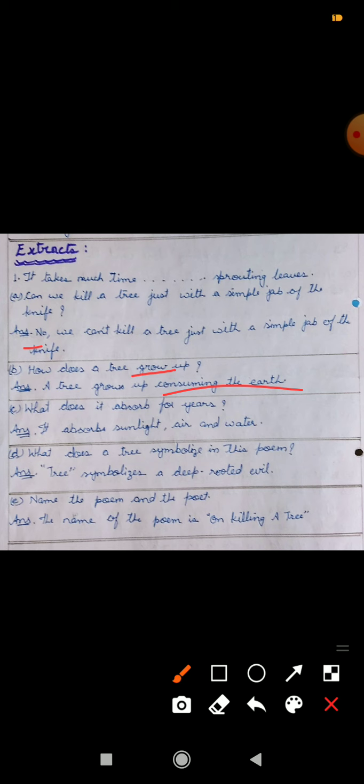Next, What does it absorb for years? It absorbs sunlight, air and water for years, through photosynthesis. Sab ko maalum hai process. Next, What does a tree symbolize in this poem? Tree kis chiz ko represent kar raha hai yahan par is poem mein? It symbolizes a deep rooted evil.